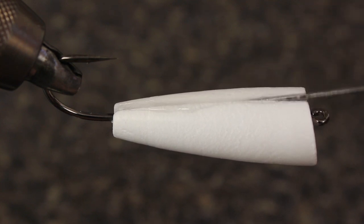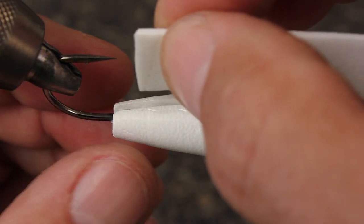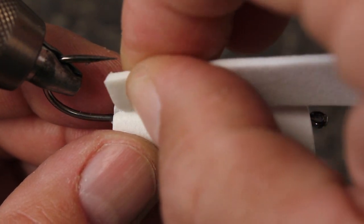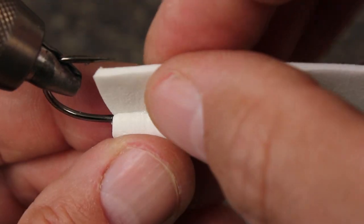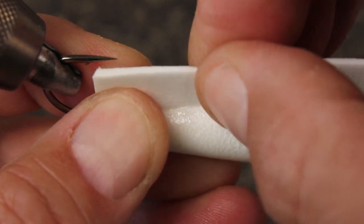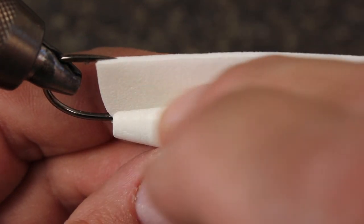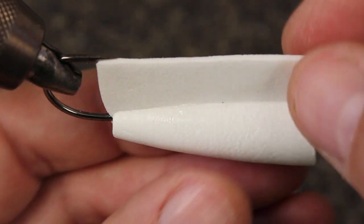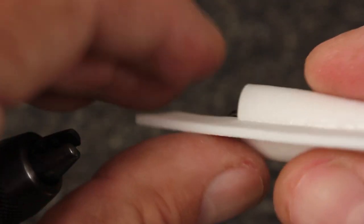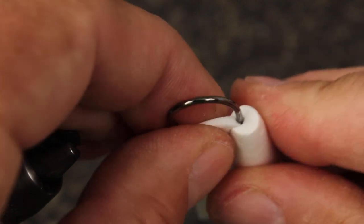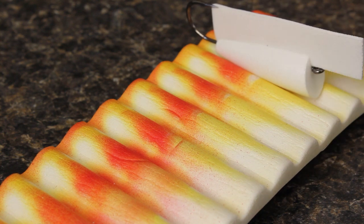You can then slip the craft foam sheet all the way down into the channel and wipe off the excess epoxy that squeezes out. The idea here is to get the foam sheet all the way down to the hook so it completely fills the channel. With this done, set aside to dry. I usually give it about 20 minutes.